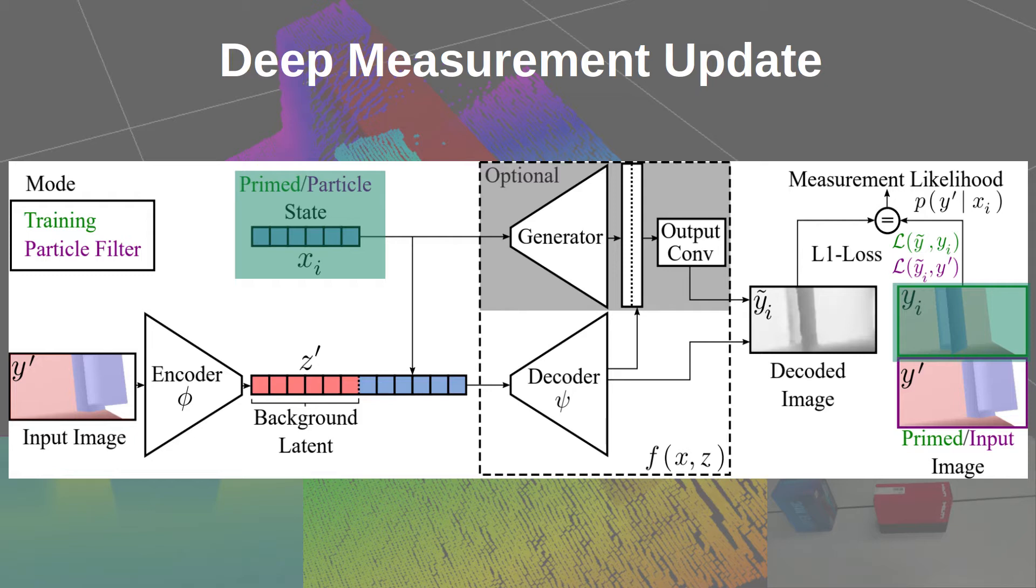When deploying as part of a particle filter, the target image is the same as the input, with the network conditioned on the queried particle state. We use the loss as a likelihood measure between the particle states and the true ground truth state. Those likelihoods are used in the measurement update for the base filter.